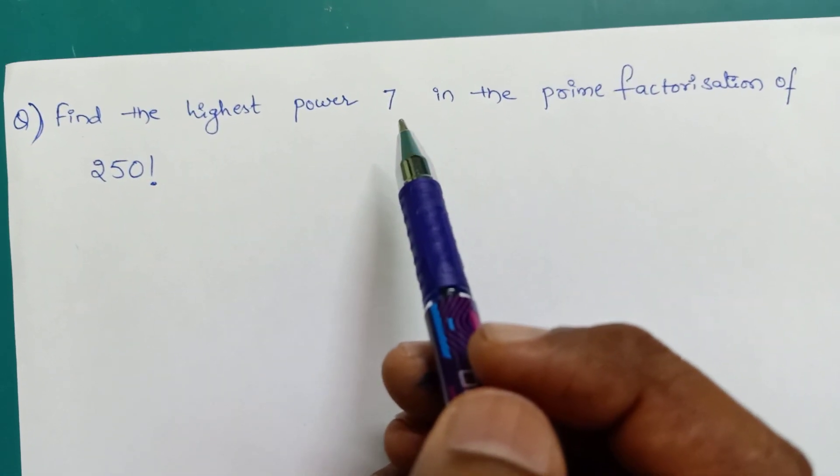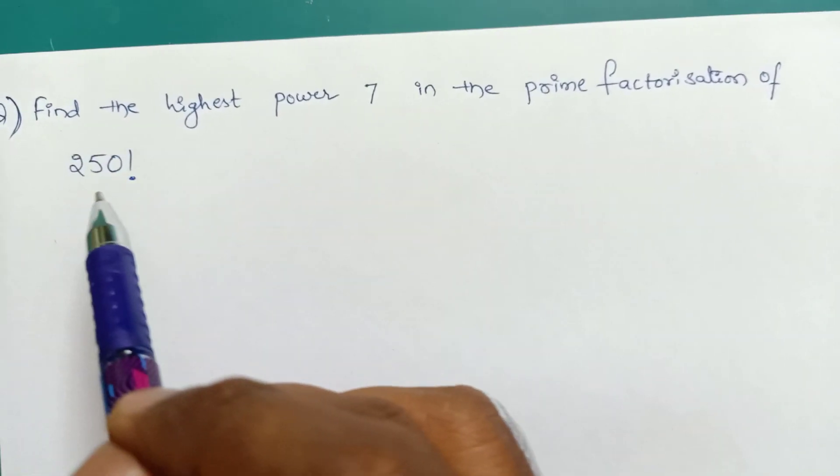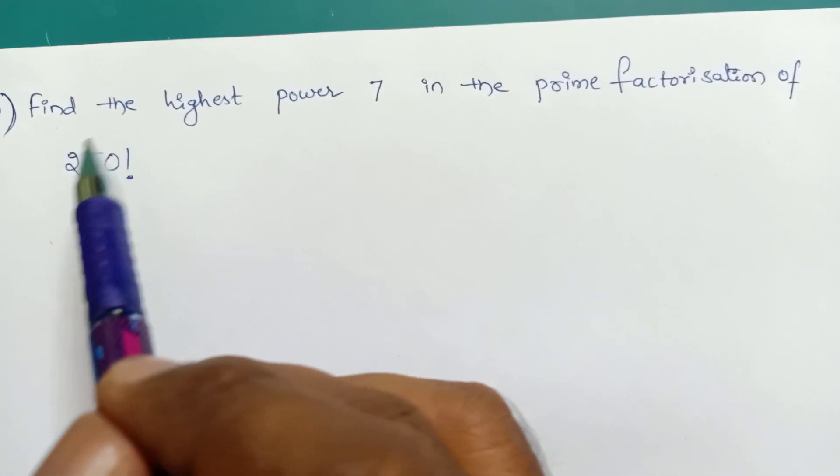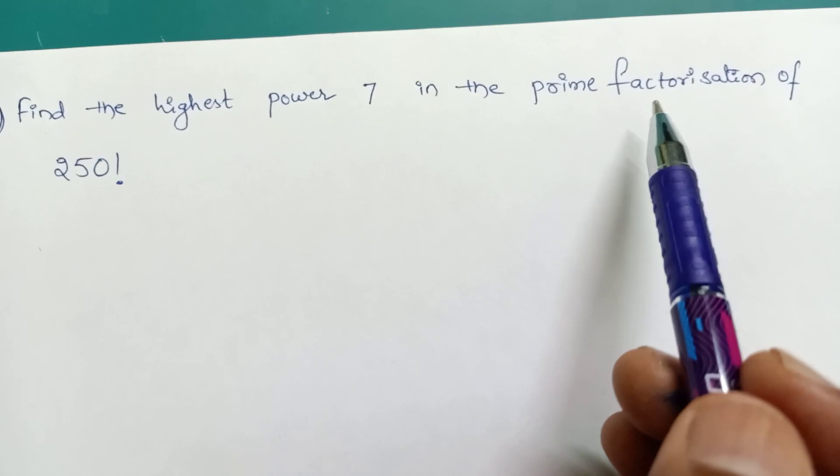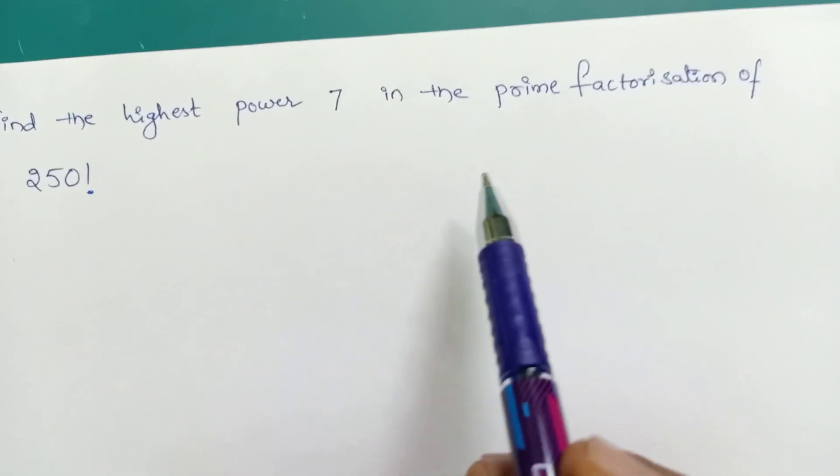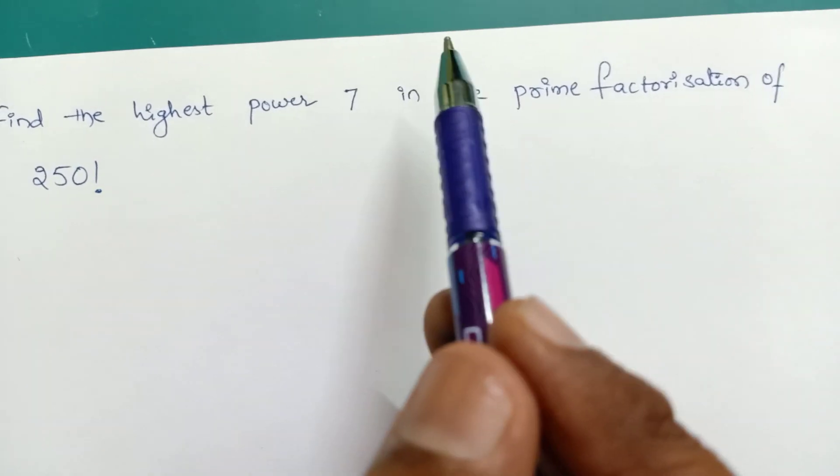Find the highest power of 7 in the prime factorization of 250 factorial. We are going to prime factorize the value of 250 factorial. Only prime numbers are products. In those prime numbers, what is the highest power of 7?